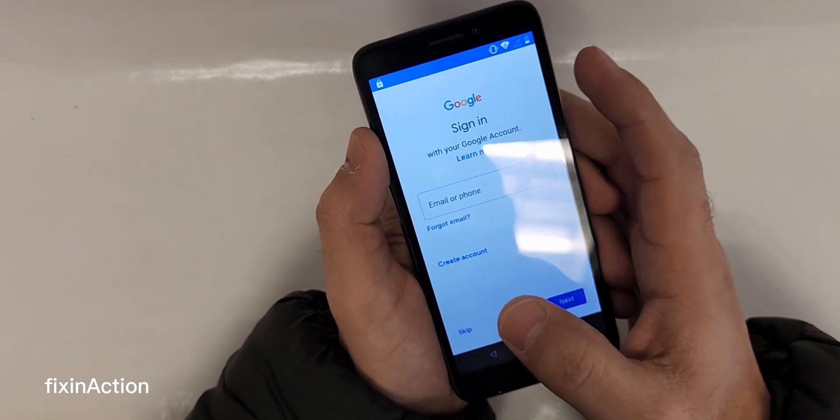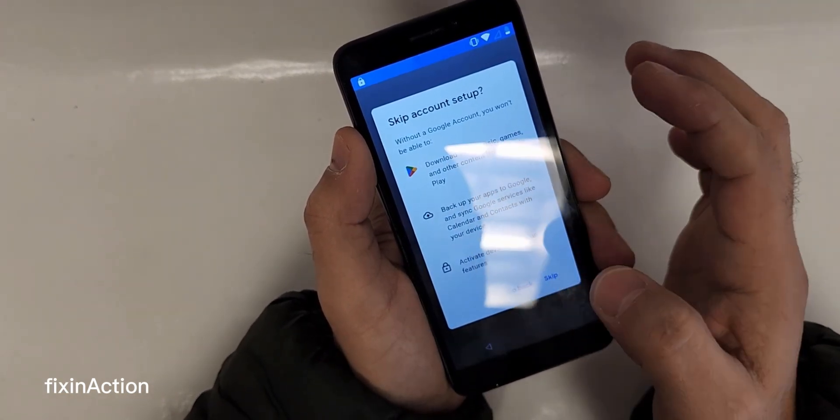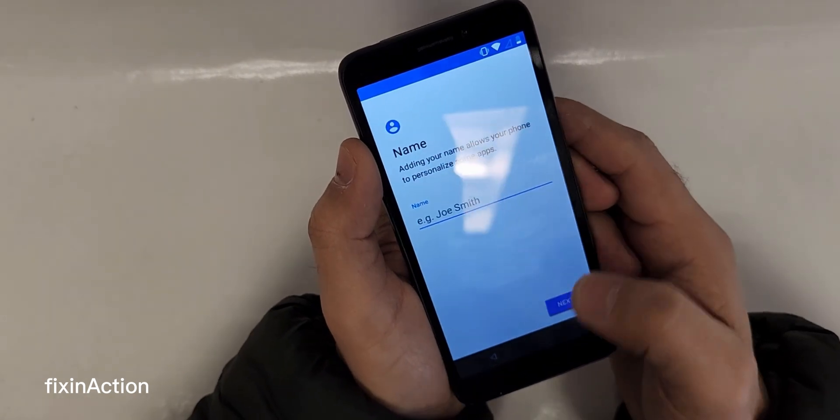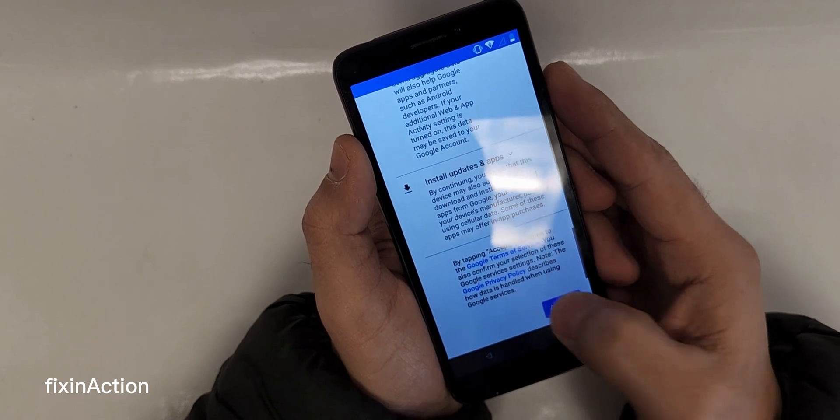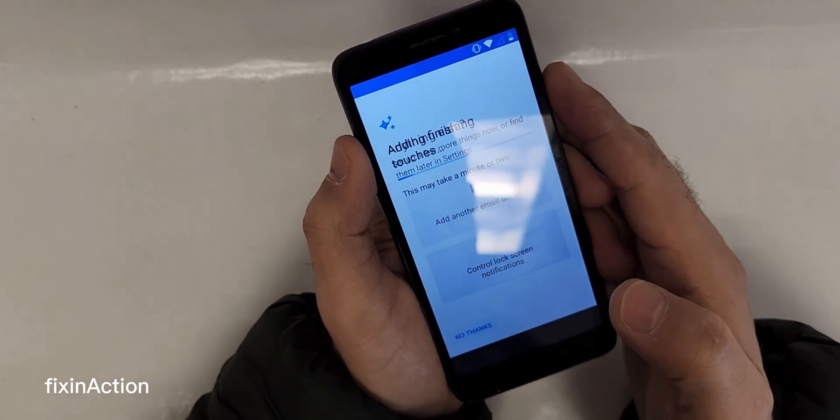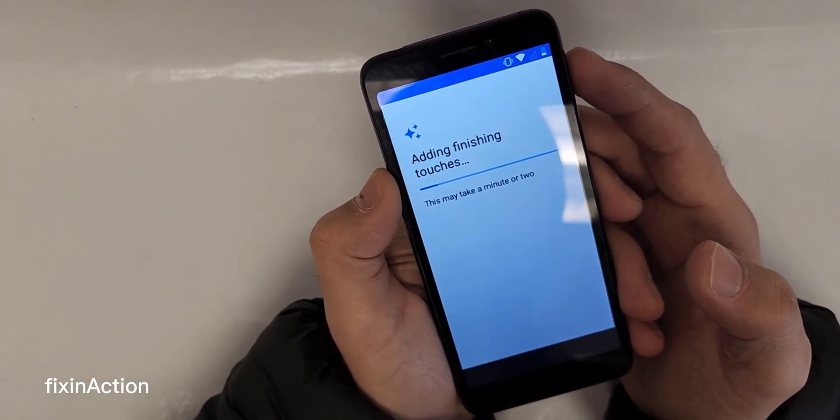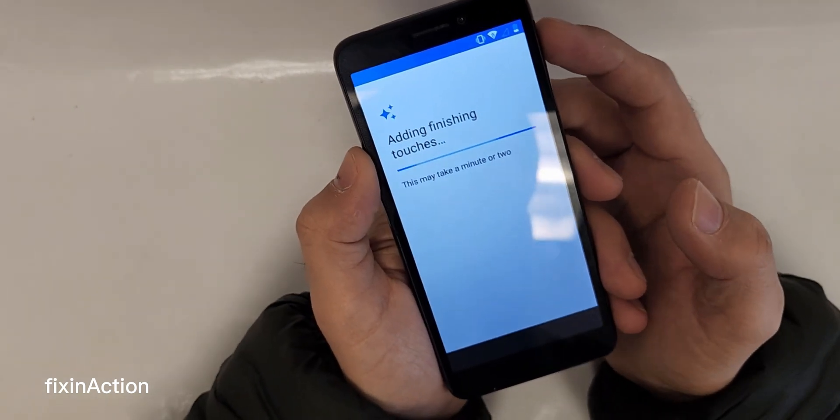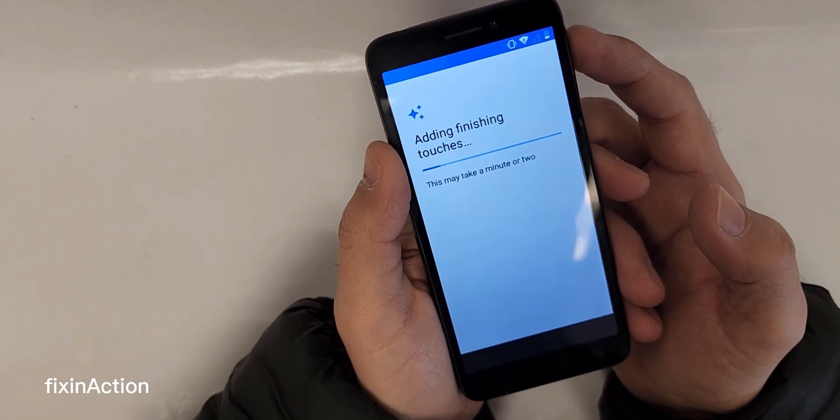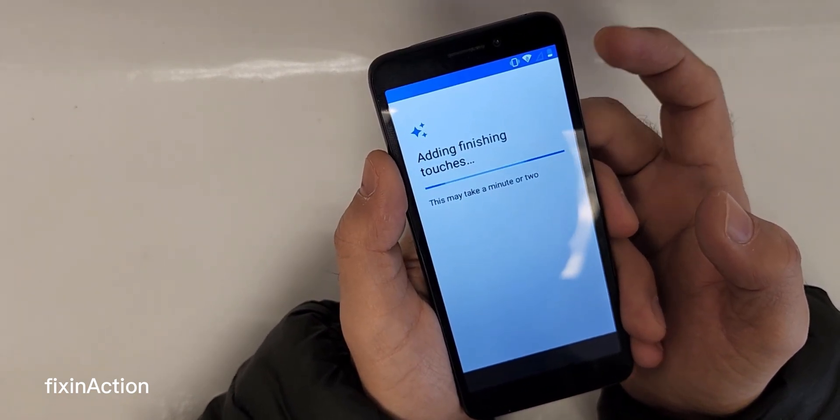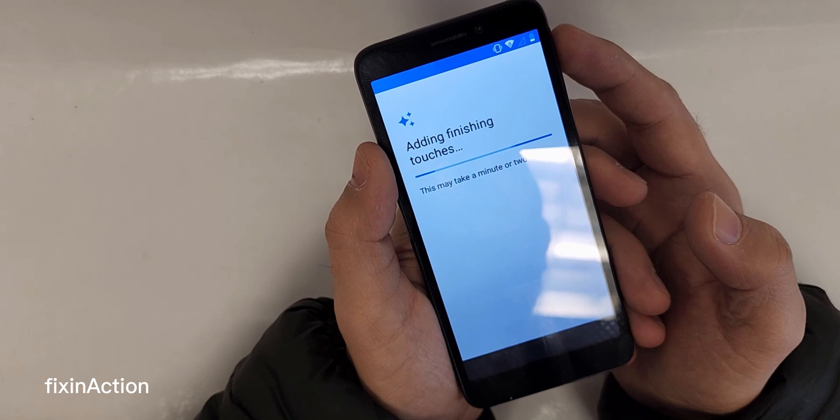That's it. We have successfully bypassed the Google account. As you can see, we can skip this screen which is asking for the Google account, or we can create a new one. We can insert the Google account later on. Let's accept this. Just follow these steps and you should be able to unlock your Alcatel TCL A1 device, model number A501DL. Hit like and subscribe for more videos. Thank you so much, we really appreciate your support.